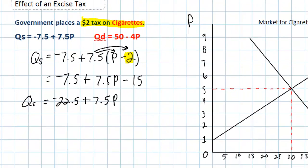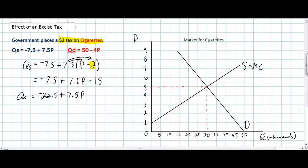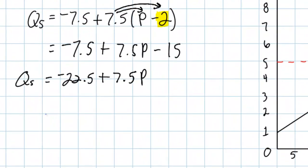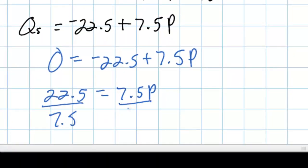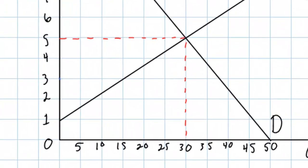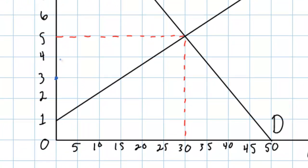Now we have our new supply equation. The next step is to find the price intercept of the new supply curve so we can draw it accurately on the graph. Setting quantity equal to 0 and solving for P: 0 = -22.5 + 7.5P, so 22.5 = 7.5P, giving P = 3. This makes sense because the original supply curve had a P-intercept of 1, and adding the $2 tax gives a new P-intercept of 3.